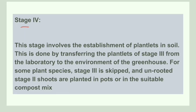Stage 4 is the establishment of the plantlets in soil. Plantlets with both shoots and roots are transferred to the soil and then moved to a greenhouse — a more favorable environment. In some cases, Stage 3 is skipped and Stage 2 shoots are planted directly into soil.